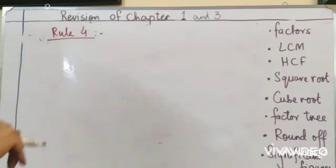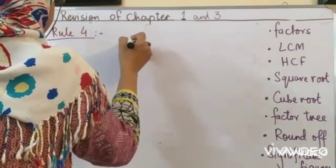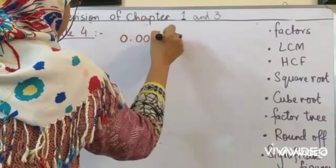Rule 4 says, in a decimal, all zeros before a non-zero digit are not significant. All zeros before a non-zero digit. Like I have already done an example.